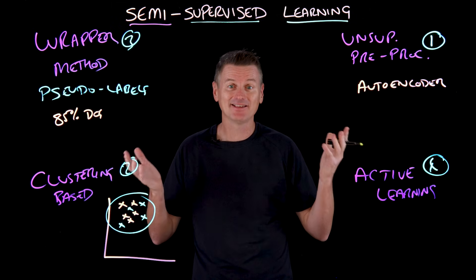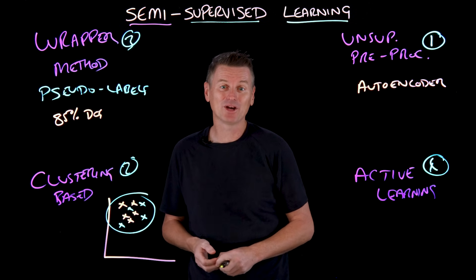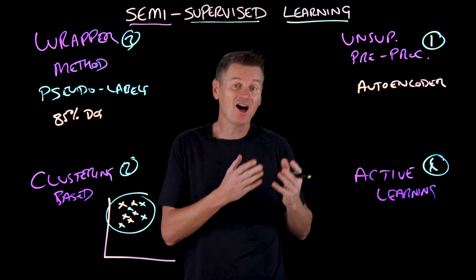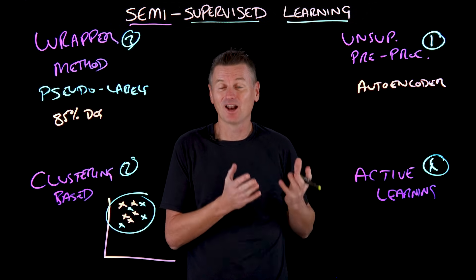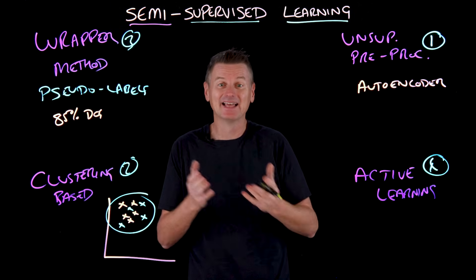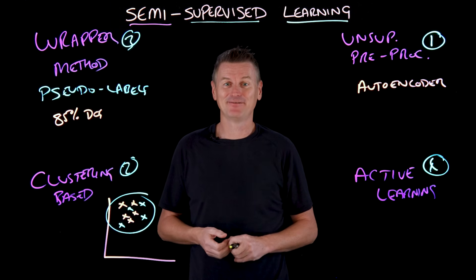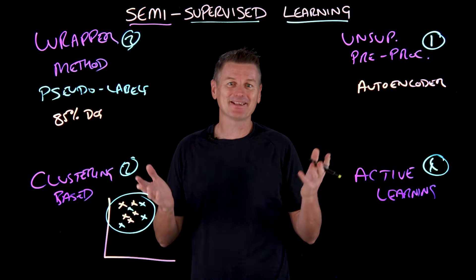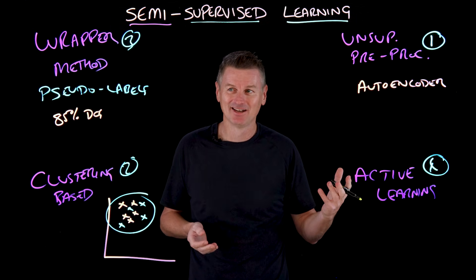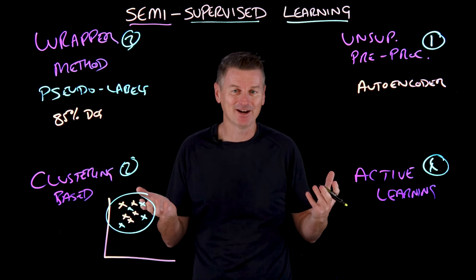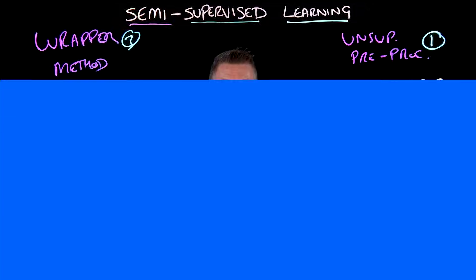So that is semi-supervised learning — a method to incorporate unlabeled data into model training alongside labeled examples, creating a better fitting model. Just like raising a cat or a dog, it needs a little bit of structure, a little bit of freedom, and a whole lot of learning along the way.